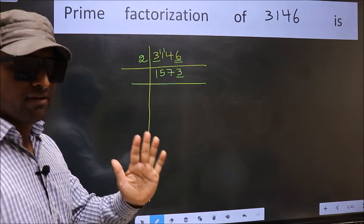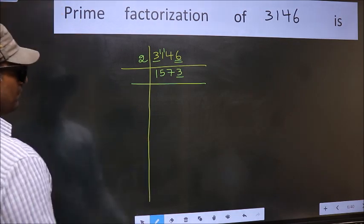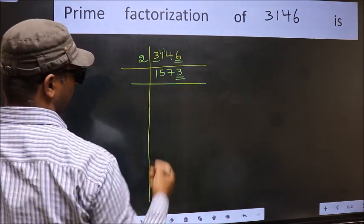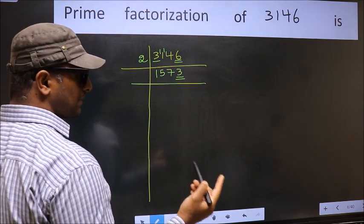Next prime number, 5. The last digit is neither 0 nor 5. So this is not divisible by 5. Next prime number, 7.